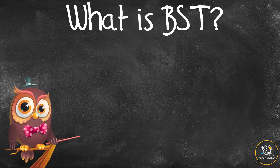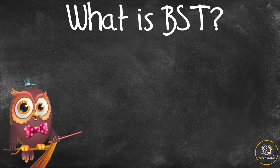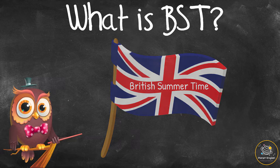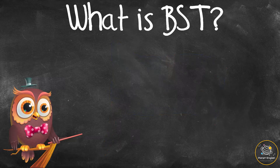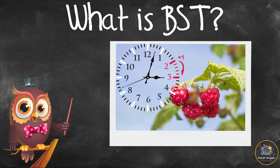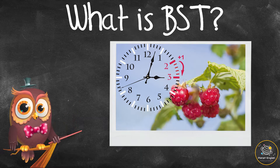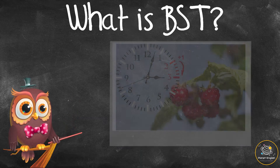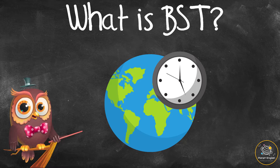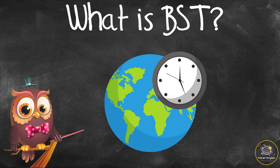What is BST? BST stands for British Summer Time. This is during summer in the UK when the clocks are one hour ahead of universal time. Universal time, or UTC, is the standard time system of the world.